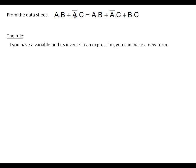In this case we've got variable A and its inverse not-A, and we can make a new term from those. Let's start with a simple example. We've got A and we've got not-A - that's the variable and its inverse - and we're going to make a new term.